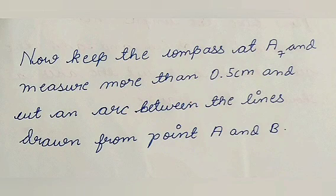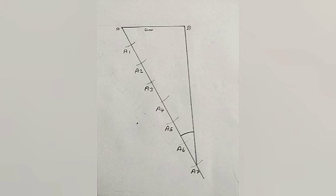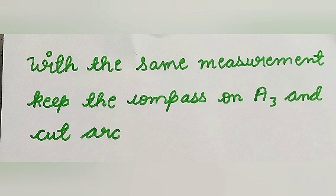Now keep the compass at A7 and measure more than 0.5 cm and cut an arc between the lines drawn from sides A and B. You can see now how the arc is cut between the lines using compass. Now remember that keep the compass with the same measurement.